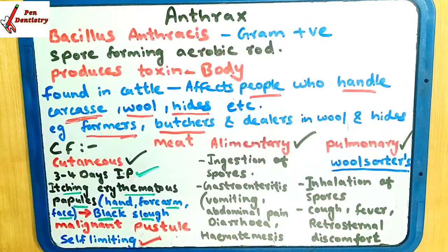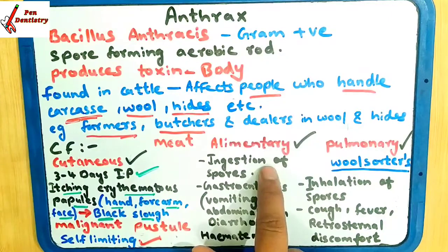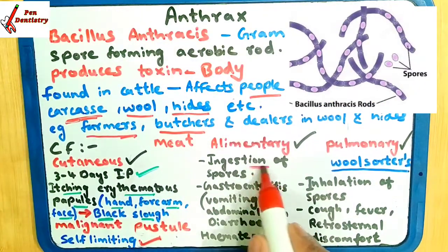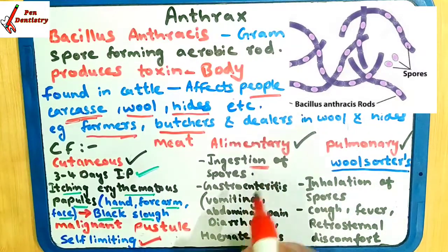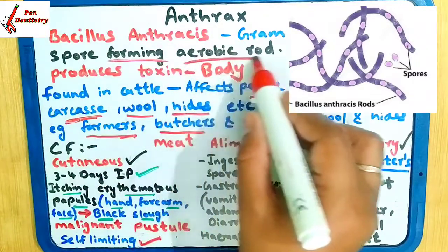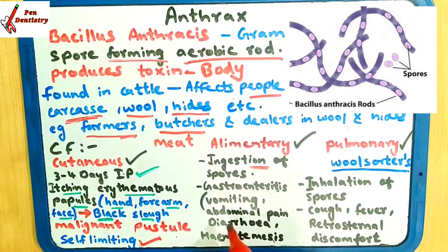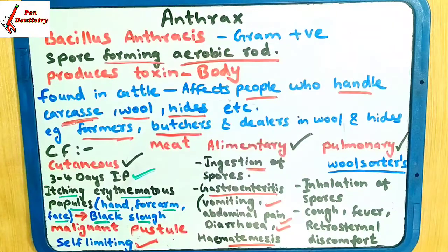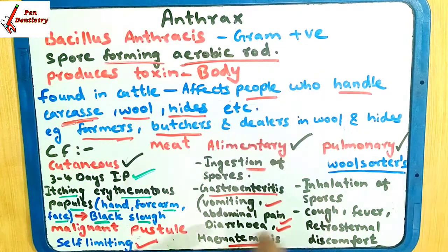Ab hum jayenge alimentary type. Alimentary type mein kya hota hai? Yahan pe ingestion hota hai spores ka. Spores ka ingestion means aap ingest kar lengi, kha lengi spores ko. Jab spore forming aerobic rods, aap uske kha lengi, tab aapko gastroenteritis hoga. Gastroenteritis ke andar kya kya aata hai? Vomiting, abdominal pain hoga, vomiting hogi, aur diarrhea hoga. Kabhi kabhi yeh hota hai ki patient ko hematemesis ho jata hai - hematemesis means jab patient blood ki vomiting karega, toh usko hematemesis bolte hai.